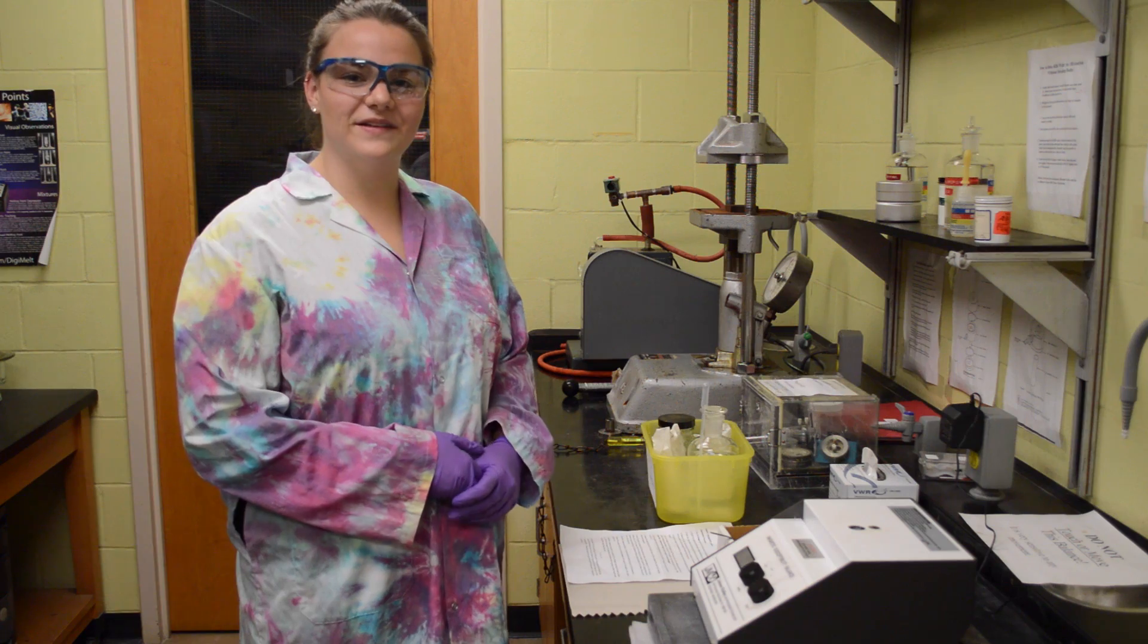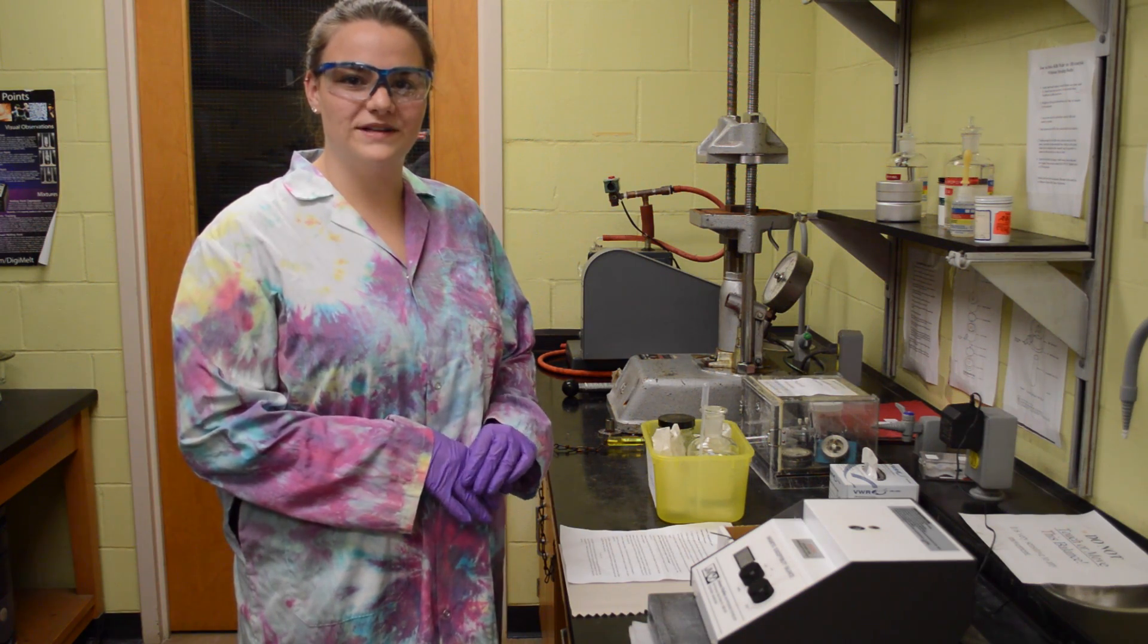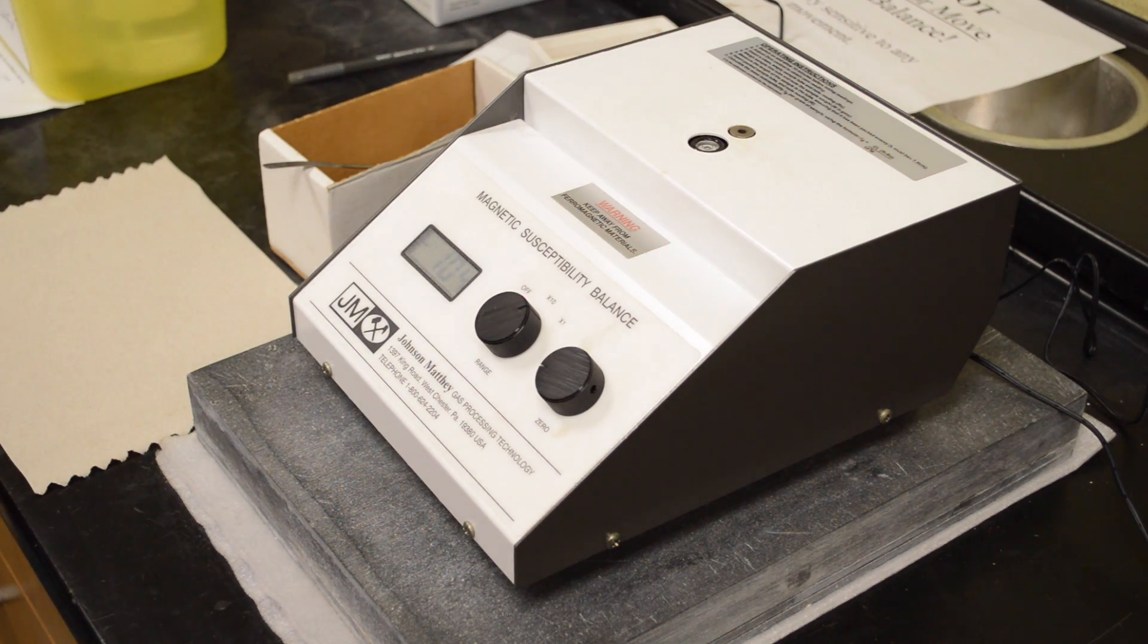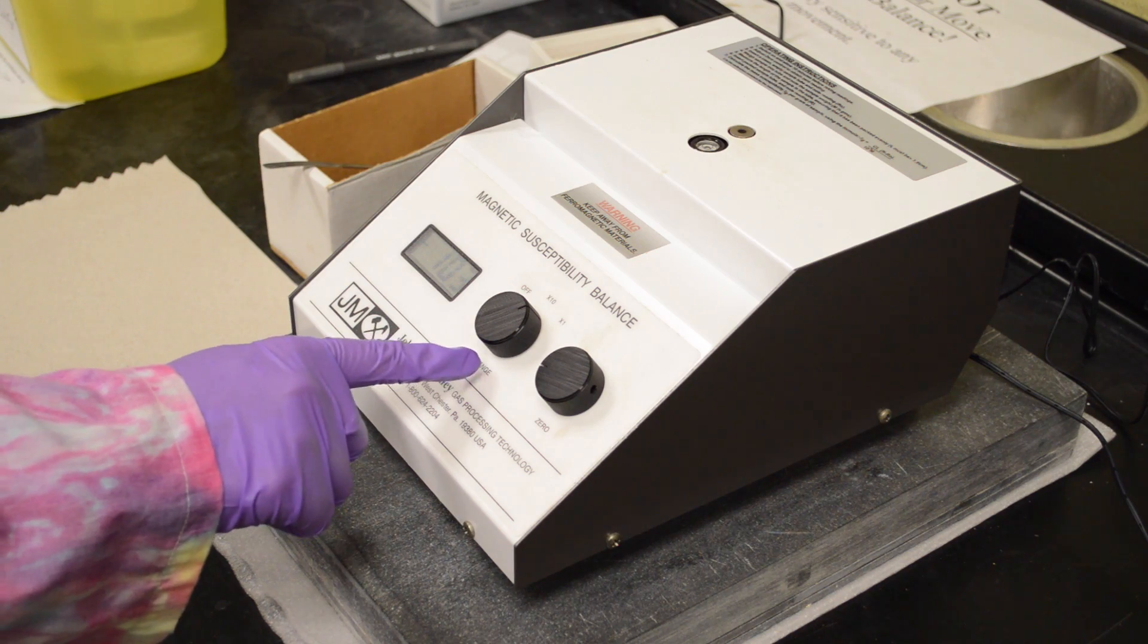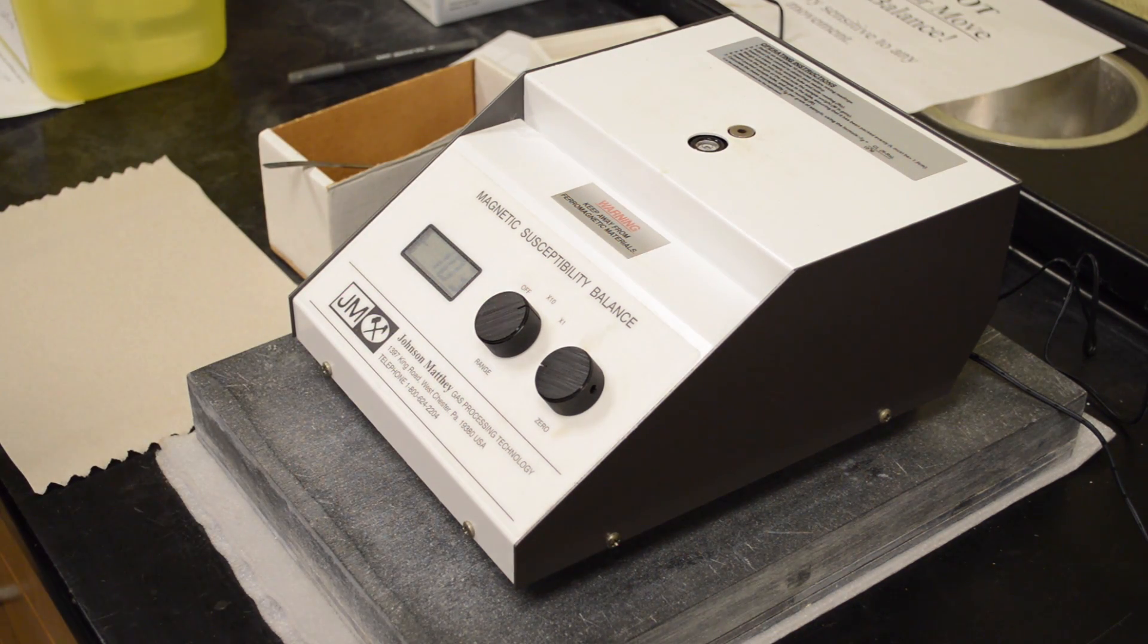The magnetic susceptibility balance is used to determine the magnetic properties of a compound. First, turn on the range knob to the 1x dial here, and let it warm up for 10 minutes.